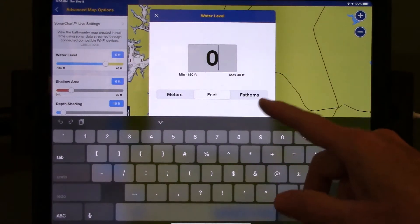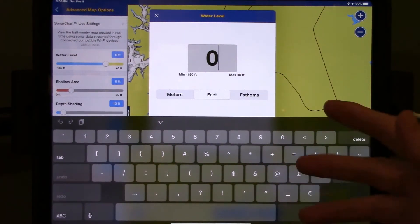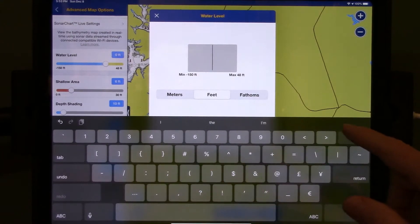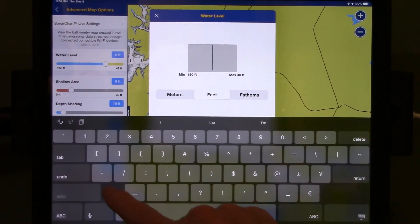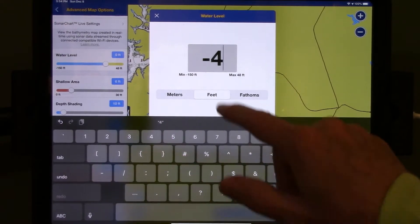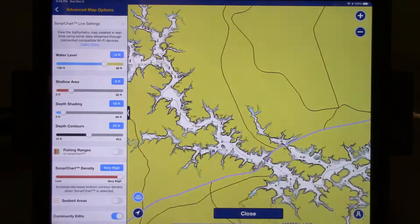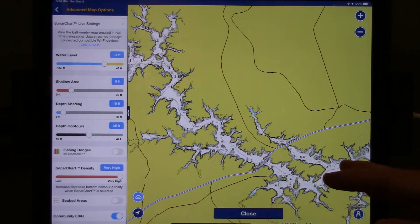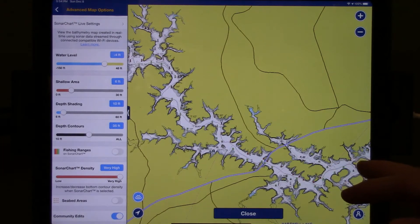In this case, the lake that I fish on most frequently is about four feet below full pool. I'm going to hit Delete to clear that field, then I'm going to press minus four and close that window. That has automatically adjusted all of the depths on my chart by four feet to account for the water level change.